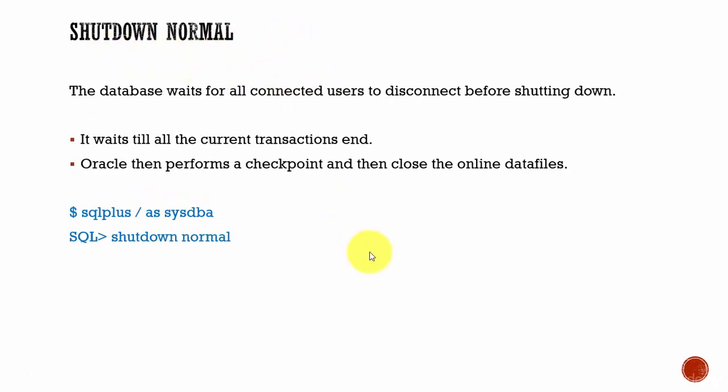Shutdown normal — in this mode, the database will wait for all the connected users to disconnect before shutting down the database. That means it will wait for all the current transactions to end. And also, if the user is starting any new transactions, it will let the new transactions start. Once the user is done with all his transactions and closes the session, then only the database will be shut down. You can issue the command shutdown normal.